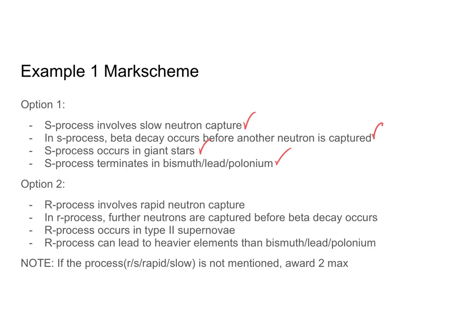For R process folks: R process involves rapid neutron capture — give yourself a point. In the R process, further neutrons are captured before beta decay occurs — that's a point. R process occurs in type 2 supernovae — a check mark. And R process can lead to heavier elements than bismuth, lead, and polonium — another check mark. The command term here is 'discuss,' which is one of our more open command terms, so describing what type of star or astronomical phenomenon this neutron capture occurs in is allowed. If you didn't specify R process, you can get two points at most. Go ahead and give yourself a grade out of three — the max you can get is three out of three even if you made four statements.